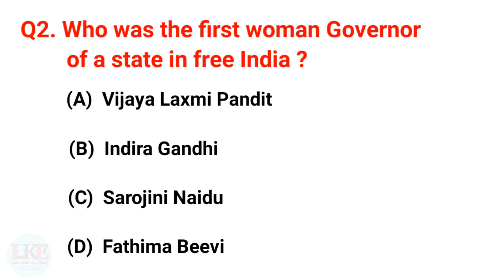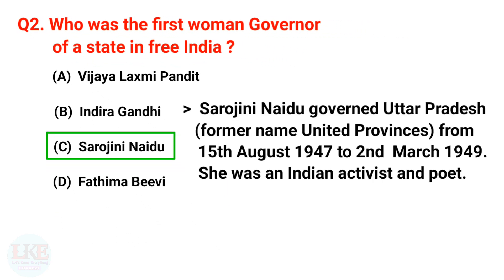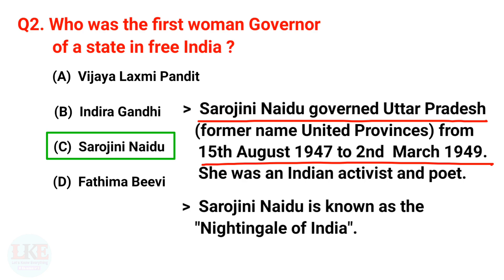Next question: Who was the first woman governor of a state in free India? Options: A) Vijay Lakshmi Pandit, B) Indira Gandhi, C) Sarojini Naidu, D) Fatima Bibi. The right answer is option C, Sarojini Naidu. She governed Uttar Pradesh (formerly United Provinces) from 15th August 1947 to 2nd March 1949. She was an Indian activist and poet, known as the 'Nightingale of India.'